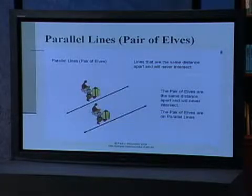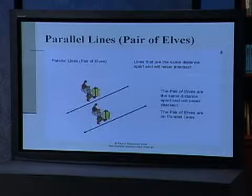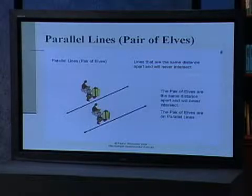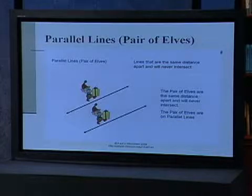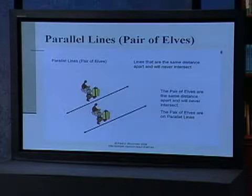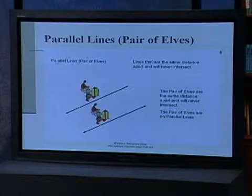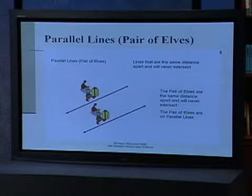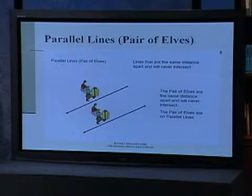Here's another example. For parallel lines, I've matched or linked that with 'pair of elves' — sounds the same, and will be familiar to most kids. The pair of elves are the same distance apart and will never intersect. That's the definition — the abstract part — now connected to the picture of the pair of elves, which is linked to the pair of lines. You're building a series of connections for students that otherwise they may have missed.